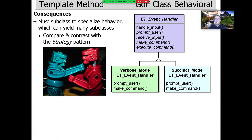What are some of the negative consequences? You need to subclass in order to specialize behavior, and as a consequence you can end up with a lot of subclasses. In our particular example it wasn't a big deal — we had two modes, verbose and succinct, and a couple of methods to customize. But when you end up with, say, 10 hook methods each of which can vary in 13 different ways, you can end up with a combinatorial explosion of subclasses, which can get very unwieldy in a hurry. It's worth comparing and contrasting the template method approach with the strategy pattern approach, which we'll discuss in just a minute.